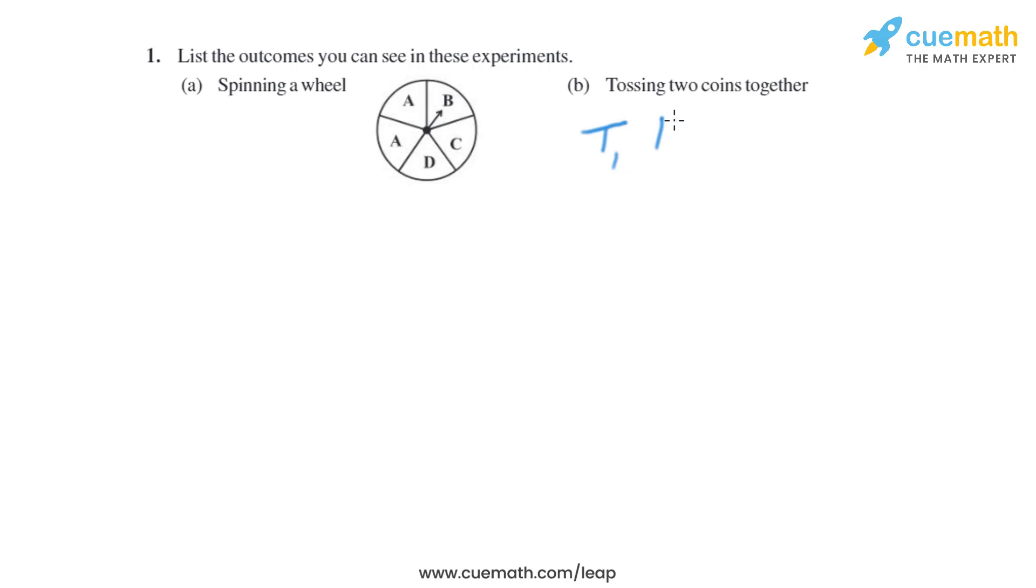In a similar way, when we spin this wheel, the possible outcomes will be: this pointer will stop at B, or it can stop at C, it can stop at D, or it can stop at A. So there are four possible outcomes of spinning this wheel. Now let's move on to part B.